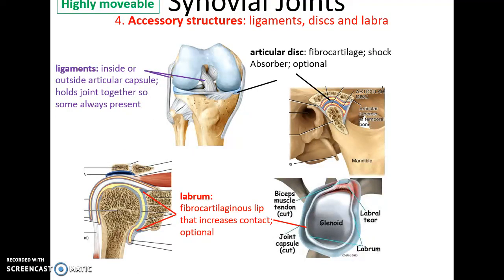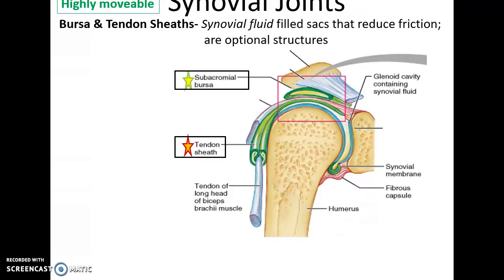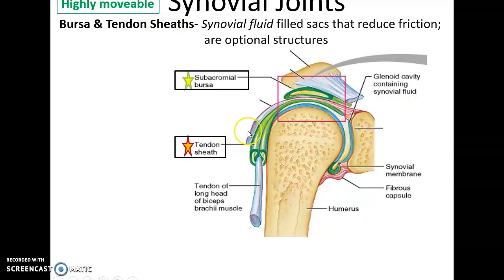Other structures can be present but are not necessary for synovial joints. Accessory structures include additional ligaments that attach bones to bones, either outside or inside the articular capsule. You can have an articular disc — a little disc of fibrocartilage inside the articular capsule. You can have a labrum — a bit of fibrocartilage lip forming around a socket-like bone that increases contact between the two bones. There are also little fluid-filled bags called bursa, which reduce friction, and tendon sheaths that wrap around tendons to protect them from rough bone.